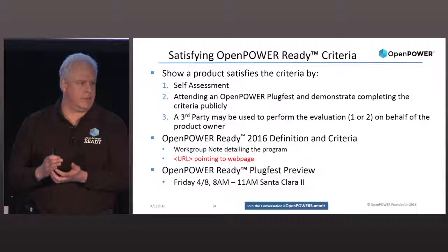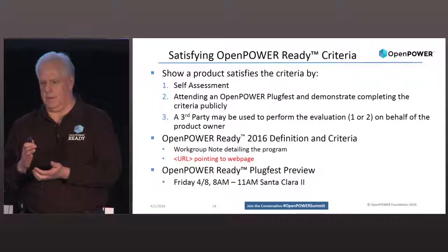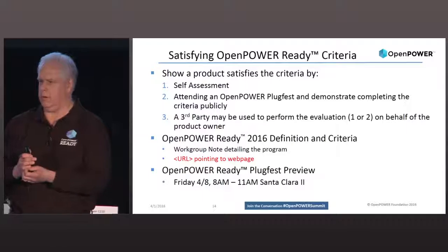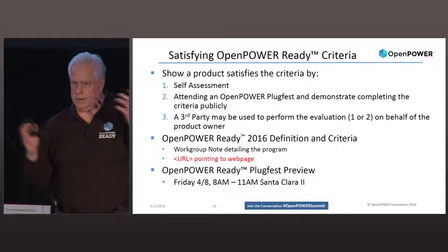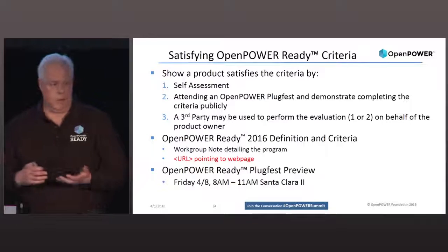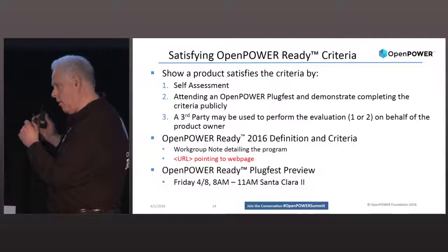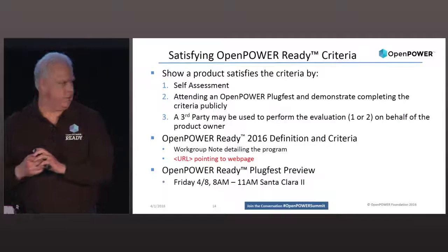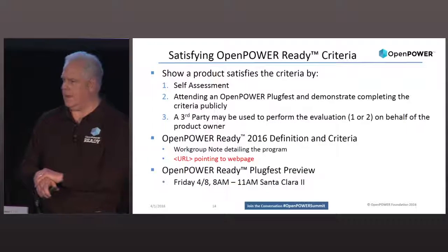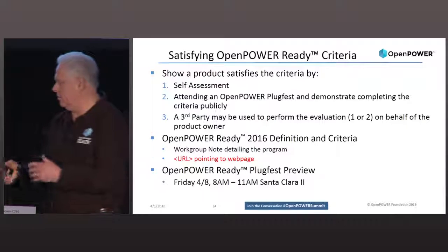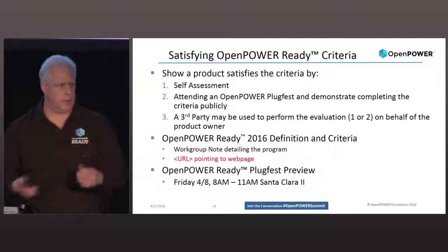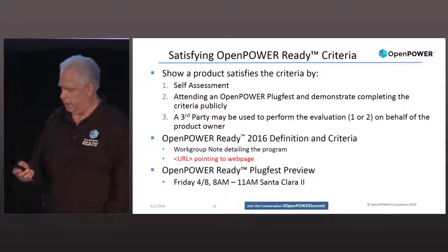68 is a lot, considering we started approving applications less than two weeks ago. We expect that list to grow dramatically. It includes things from systems, software, IO adapters, and CAPI adapters — a broad spectrum.